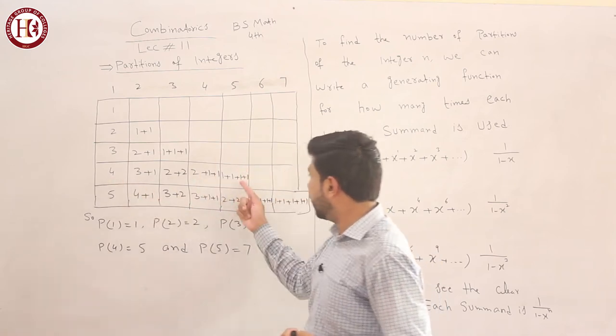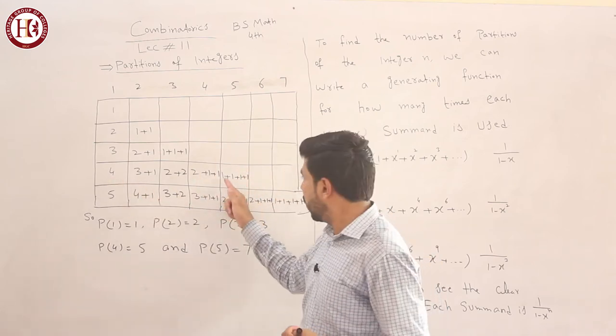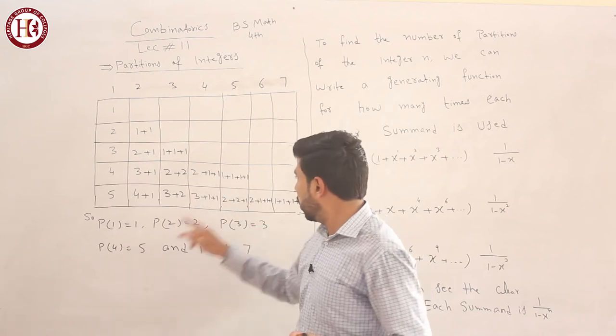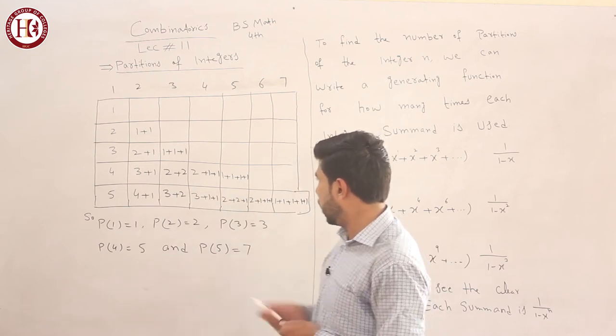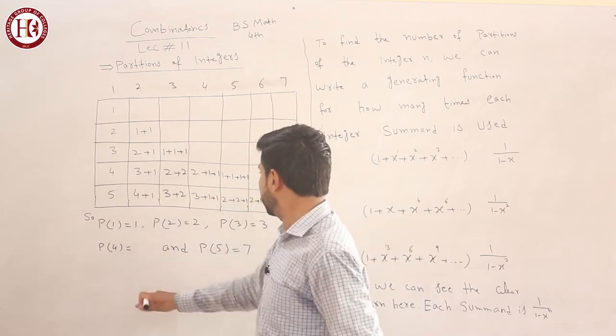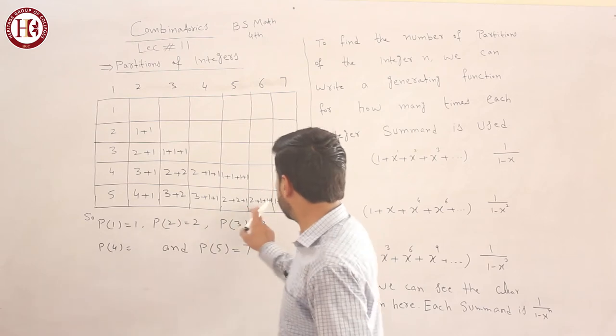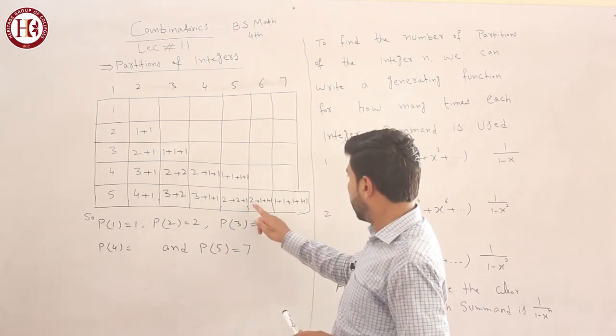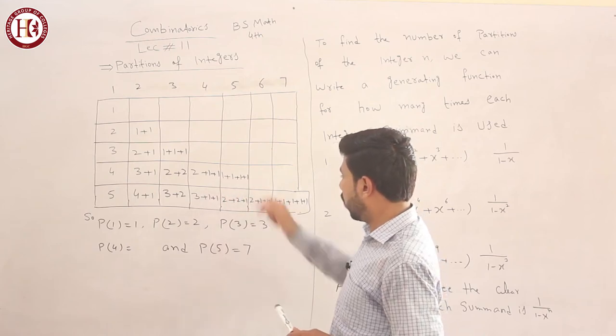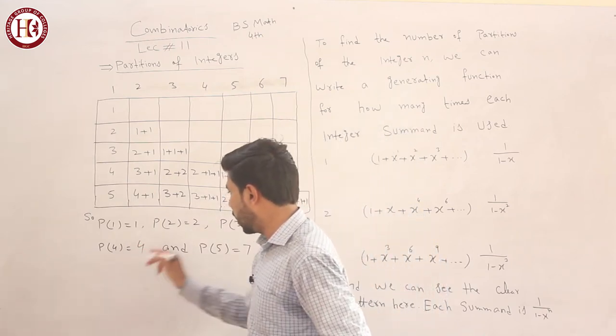For 4, how many times? You have 1, 2, 3, 4. The partition of 4 gives you 4 ways. So P(4) equals 4.